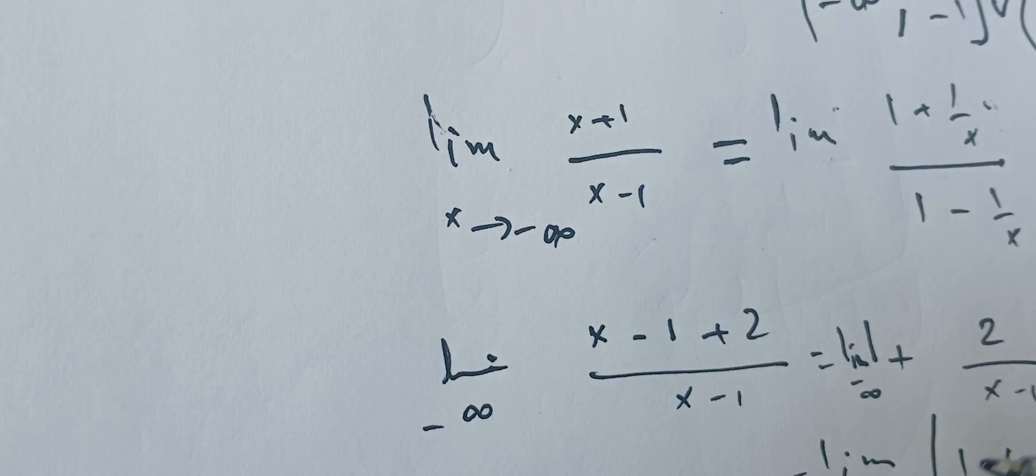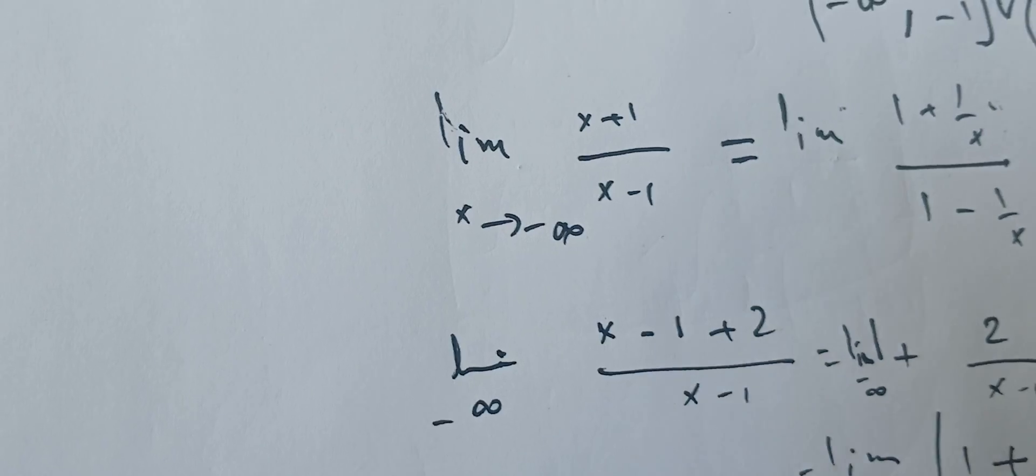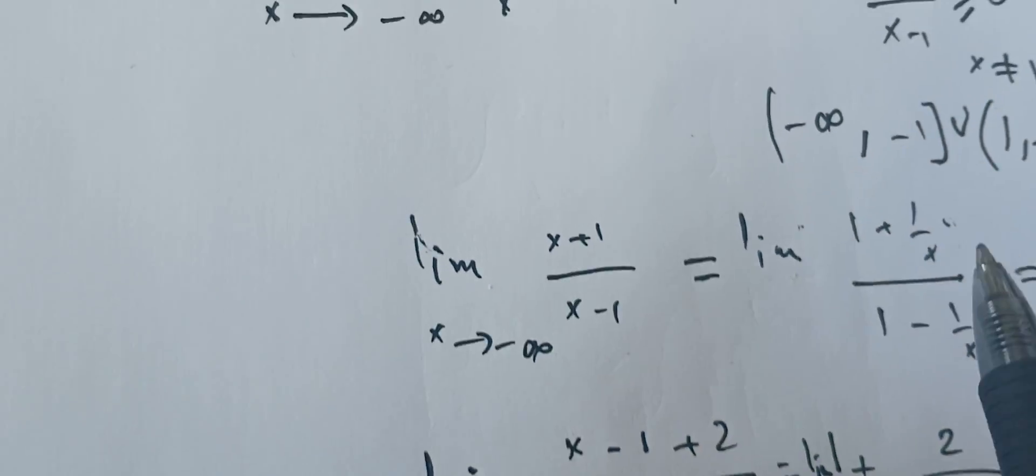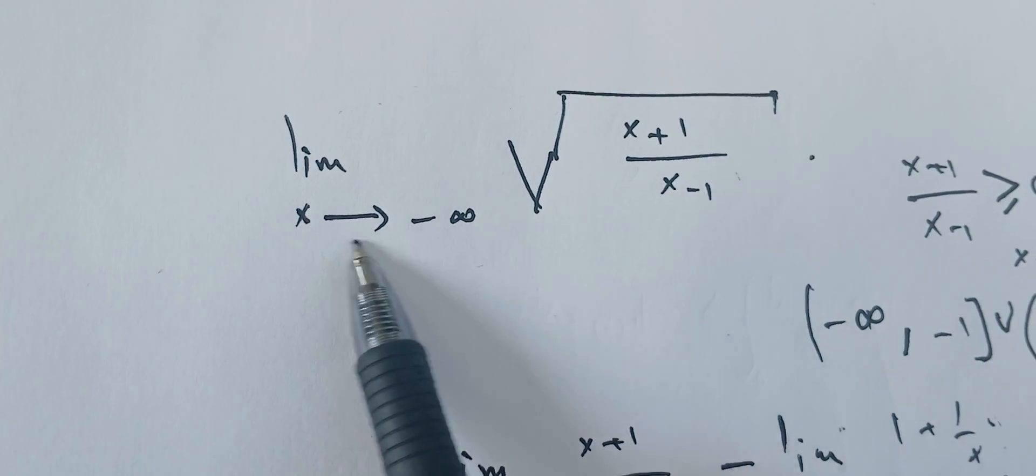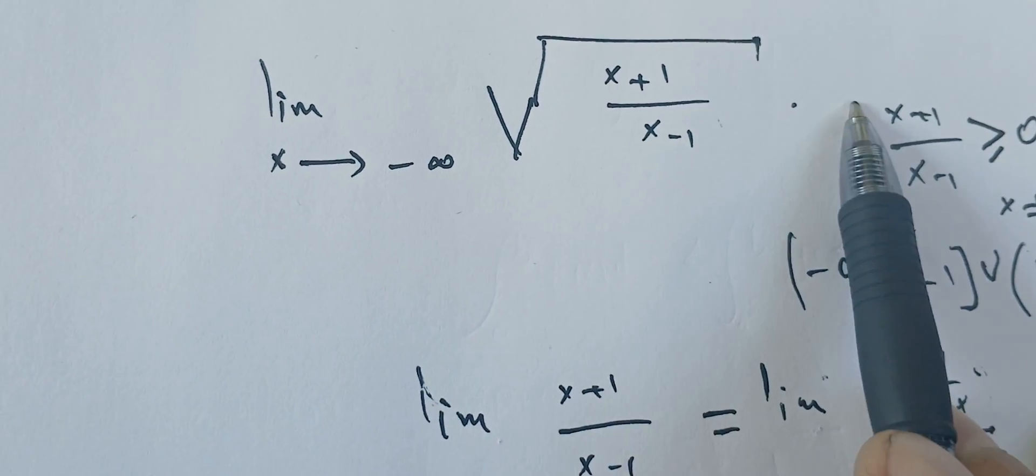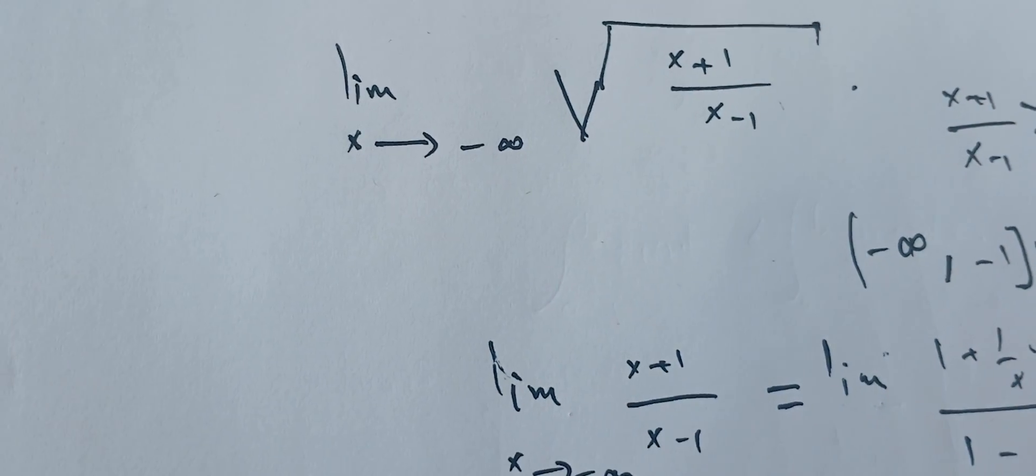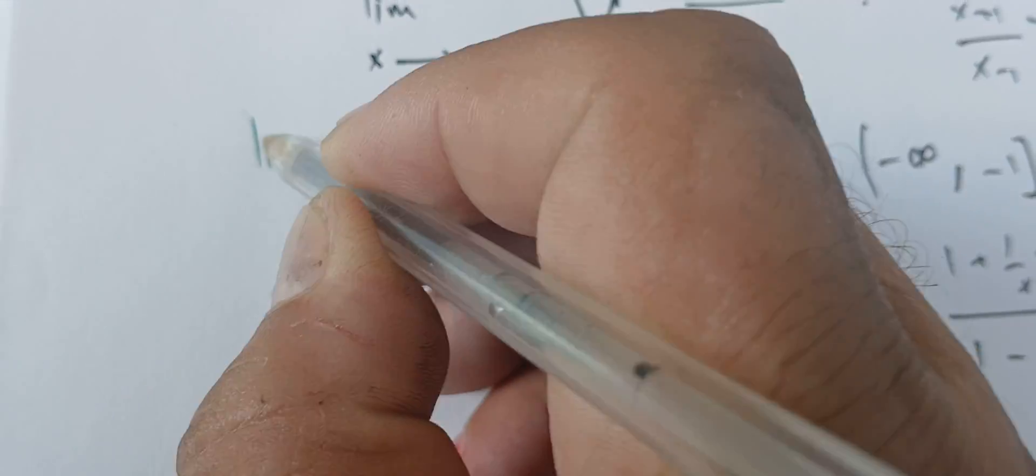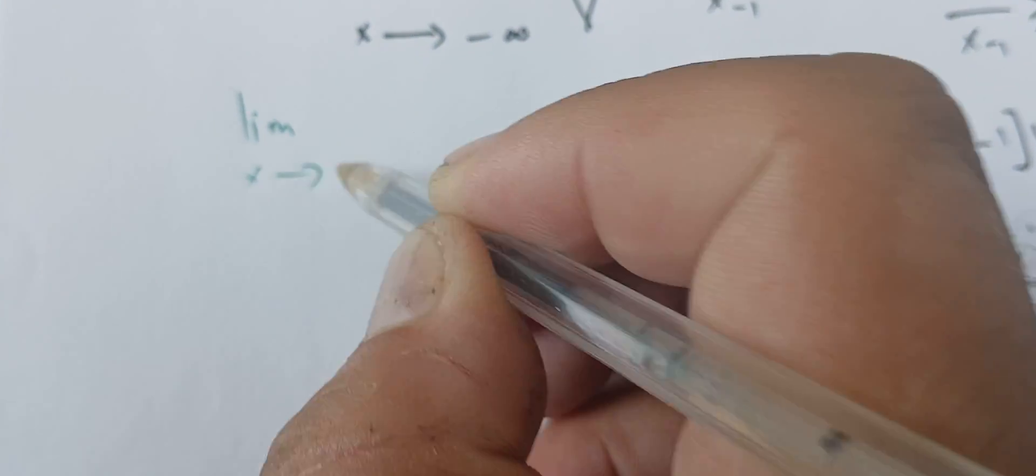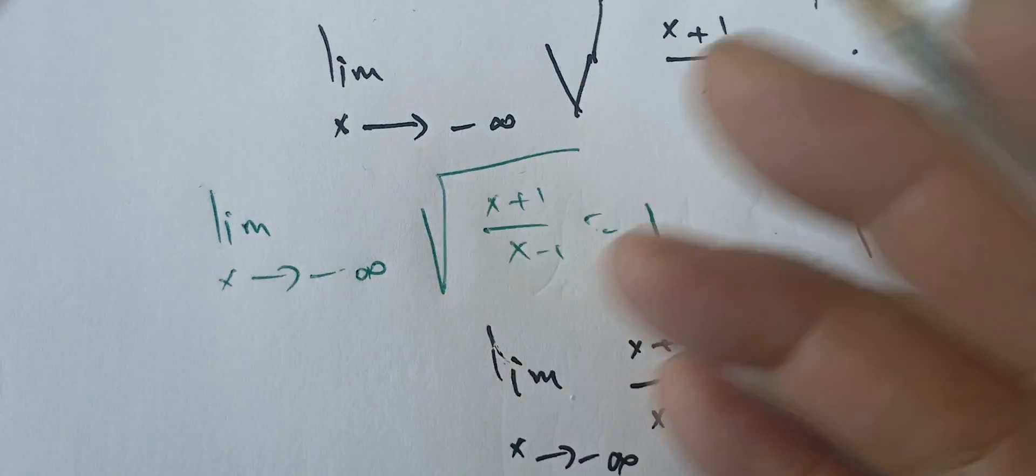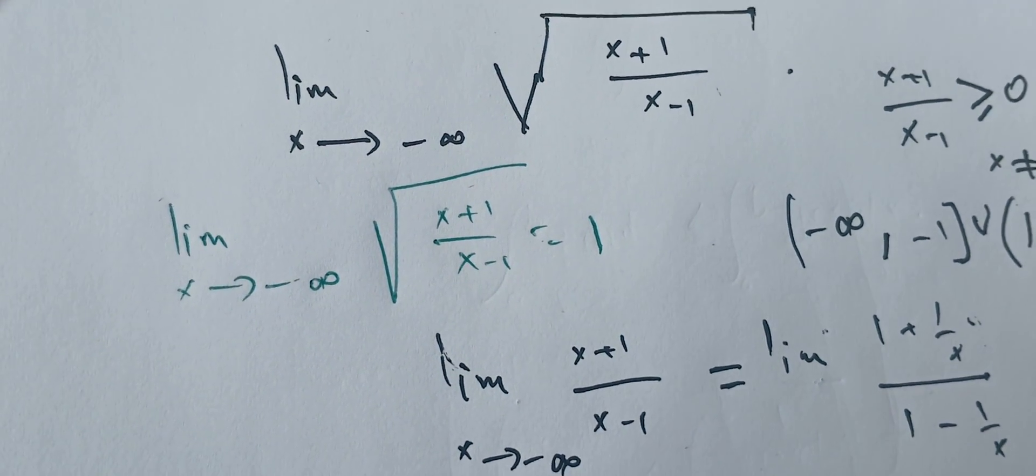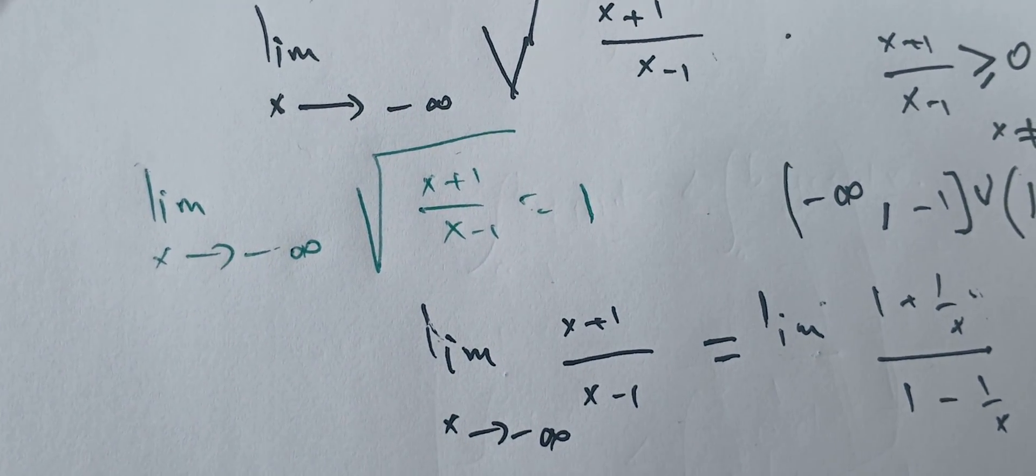Using the fact that this limit is 1 and the square root is a continuous function, we can enter the limit inside and get the square root of 1, which is 1. Therefore, I can conclude that the limit as x goes to minus infinity of the square root of x plus 1 over x minus 1 is just 1. If you see any errors or mistakes, please let me know. Thank you again.